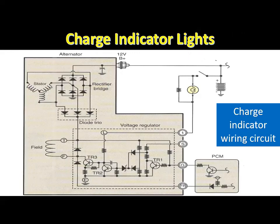Some charge indicator lights have a resistor connected in parallel with the bulb. When the ignition switch is turned on, current flows through the charge indicator bulb and parallel resistor to one of the alternator terminals. This current flows through the alternator number one terminal to the alternator field coil and electronic voltage regulator to ground, and the charge indicator light is on.